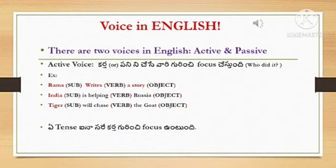For the next example: India is helping Russia. Here India is subject, is helping is verb, and Russia is object. For the next example: Tiger will chase the goat. Tiger is subject, will chase is the verb, and the goat is object. You can understand what is active voice and what is the syntax. We can use any tense and maintain the focus on the subject.